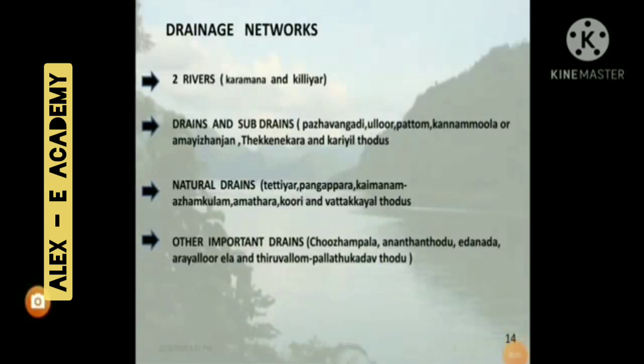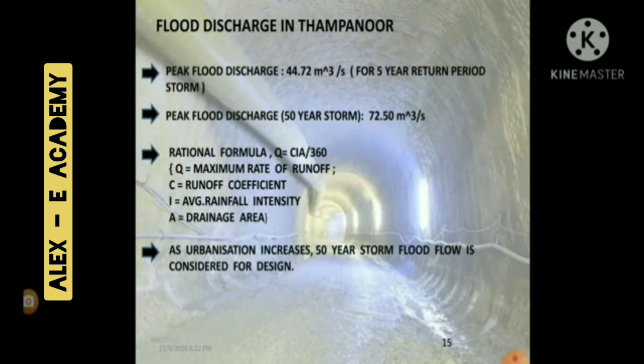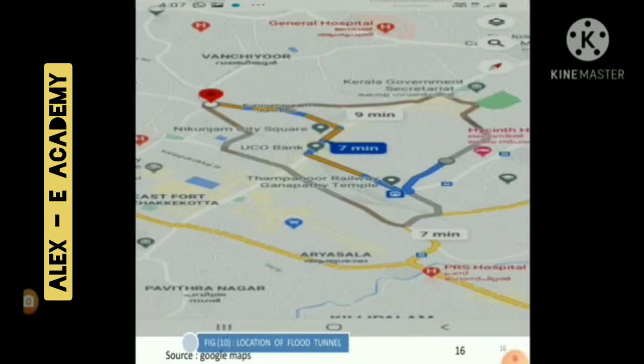This is the drainage network of Thiruvananthapuram City. There are two rivers, drains, sub-drains, natural drains, and other important drains. Flood discharge in Tampanoor: peak flood discharge is 44.72 m³/s for a 45-year return period and 72.50 m³/s for a 450-year return period. The rational formula used is Q = CIA/360. As urbanization increases, the 50-year term flood flow is considered for design.